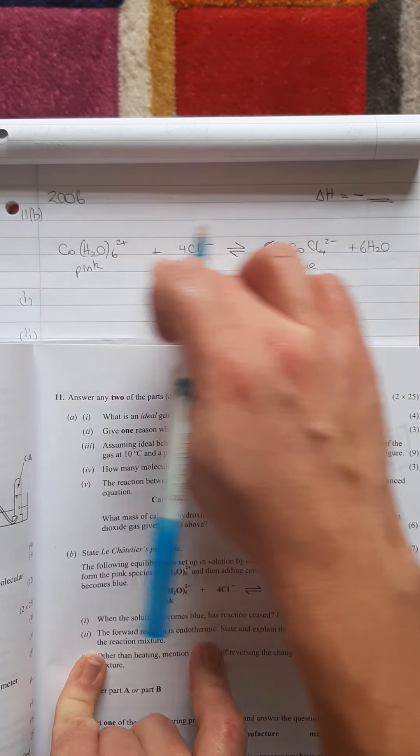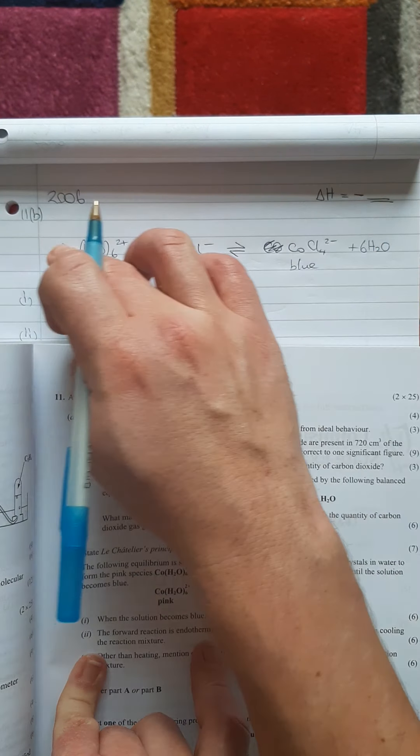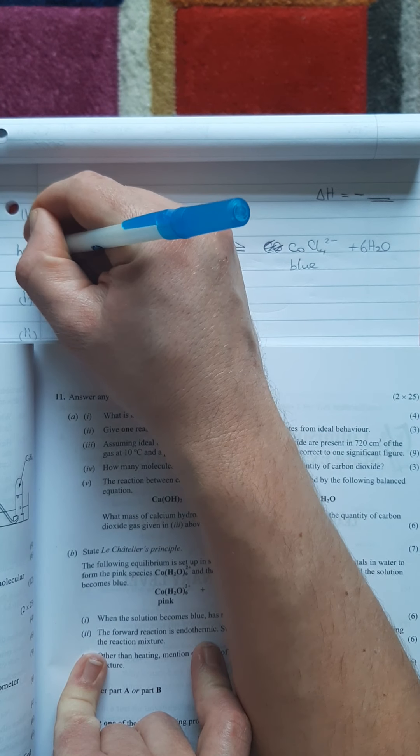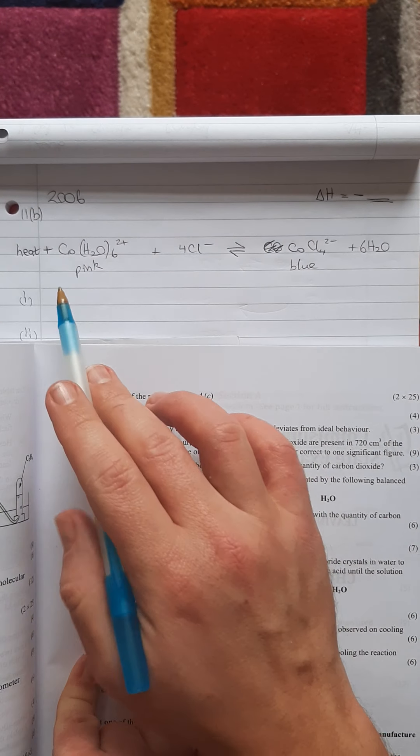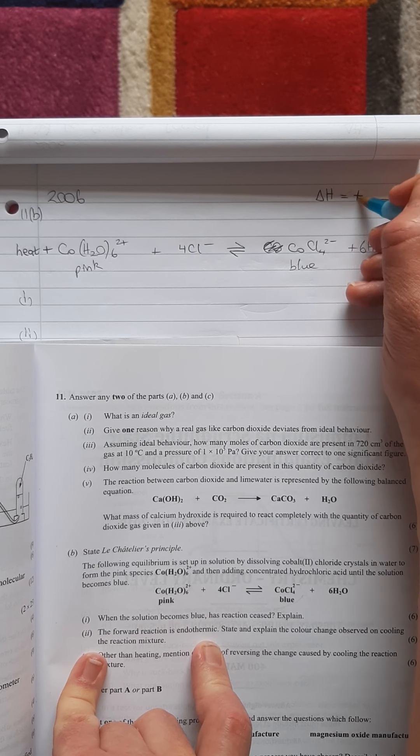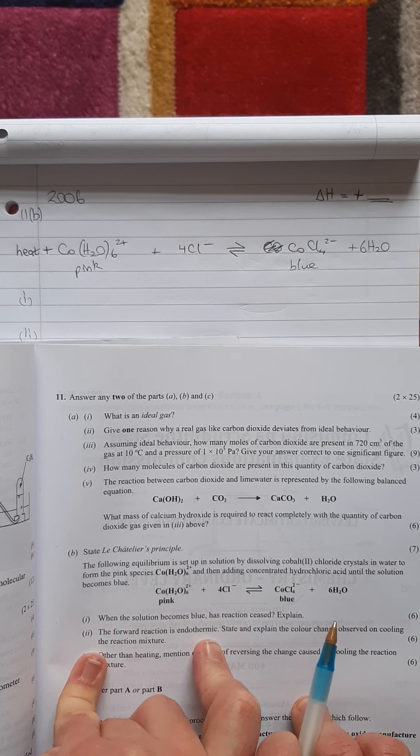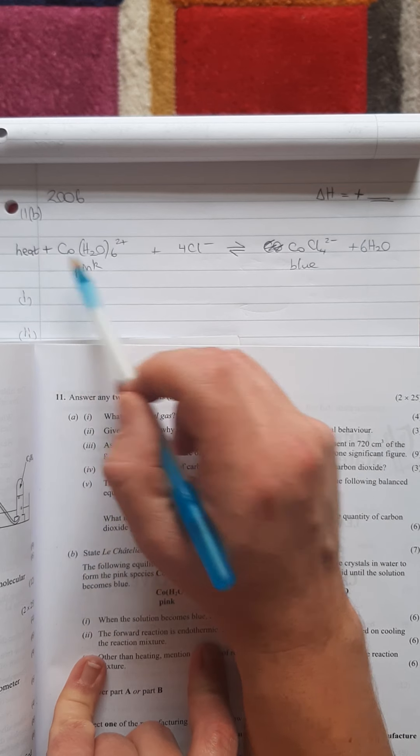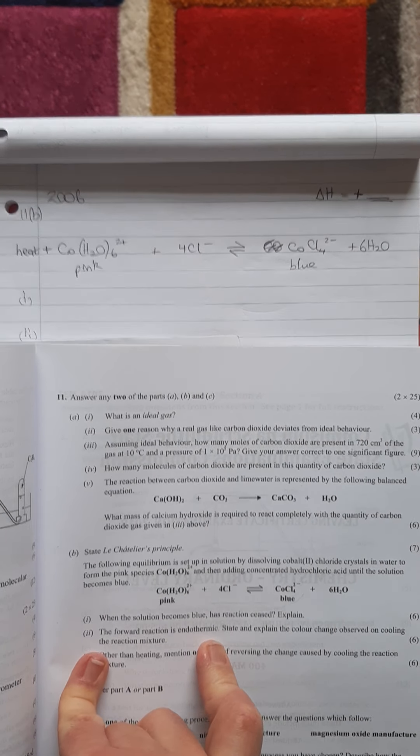For this forwards reaction, it takes in heat. What I like to do is write heat there as a reactant. This is an endothermic reaction going forwards, so delta H is actually positive. It takes in the heat, so the heat here is like a reactant.